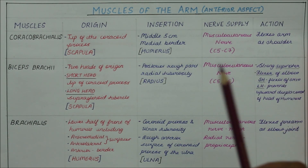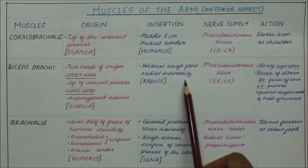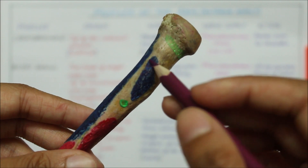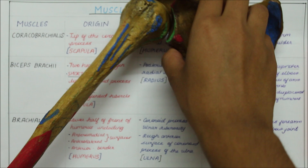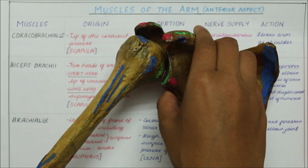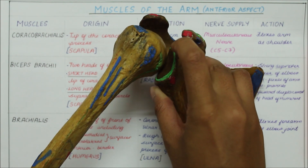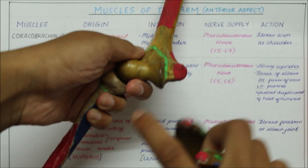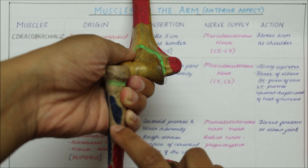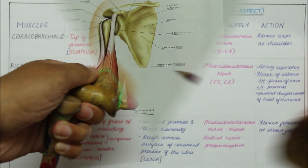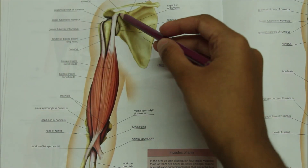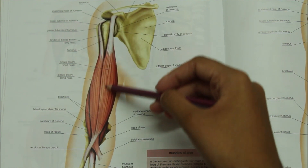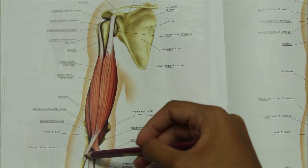Moving on to its insertion, the biceps brachii is inserted into the posterior rough part of the radial tuberosity of the radius. The biceps brachii originates from two heads — the short head from the tip of the coracoid process and the long head from the supraglenoid tubercle — and they insert into the rough posterior part of the radial tuberosity right here. It crosses the humerus and reaches the radius.